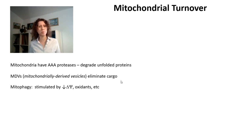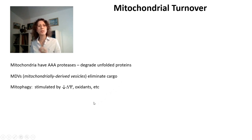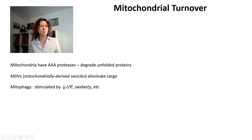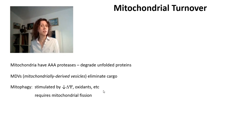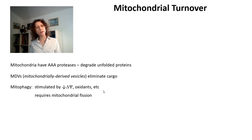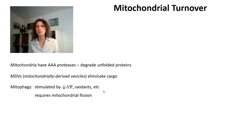We also have processes of mitophagy, in which a mitochondrion is eliminated when something is wrong with it — generally signaled by a low membrane potential or by oxidative modification. In order for mitophagy to happen, you have to have fragmented mitochondria; they can't be part of the whole network. So mitophagy requires mitochondrial fission. In fact, if you eliminate mitochondrial fission in a cell, taking away the machinery for fission, you eliminate mitophagy.